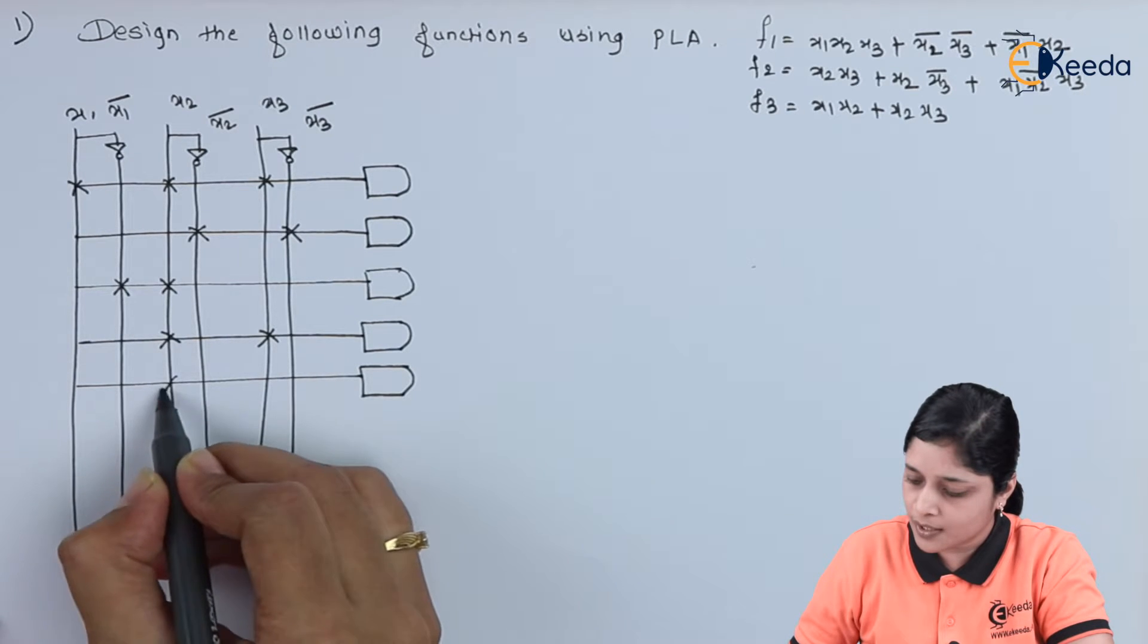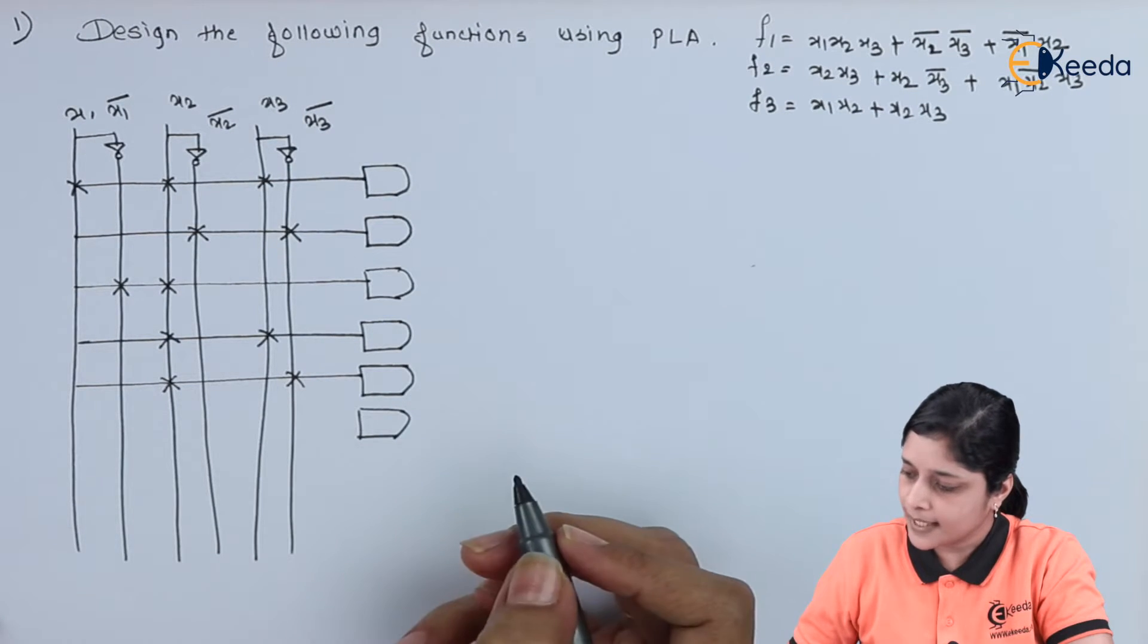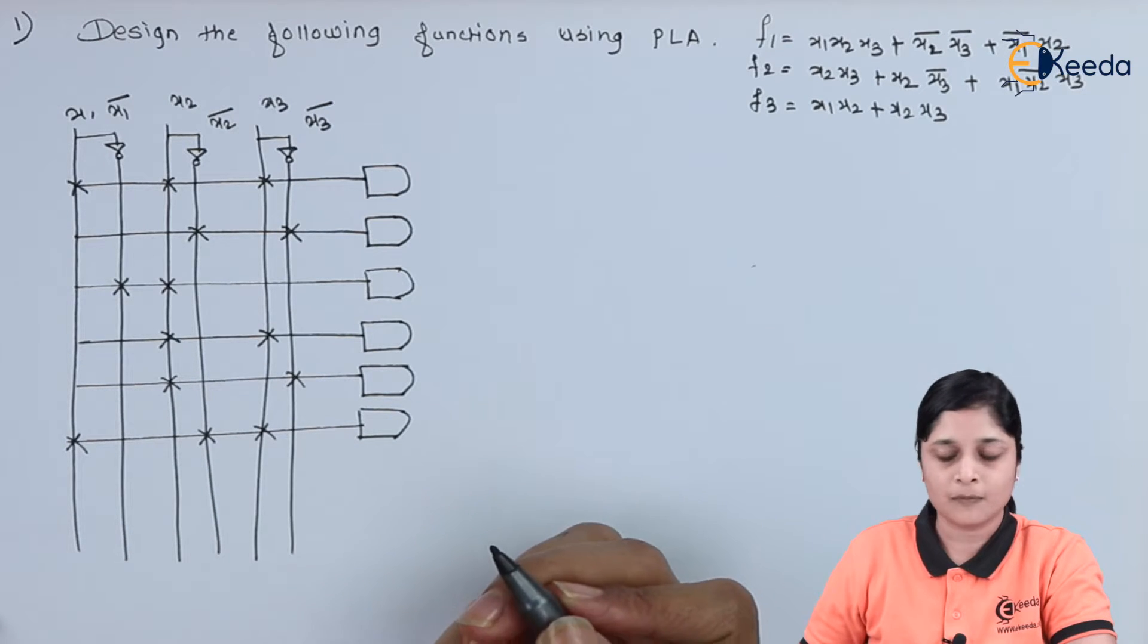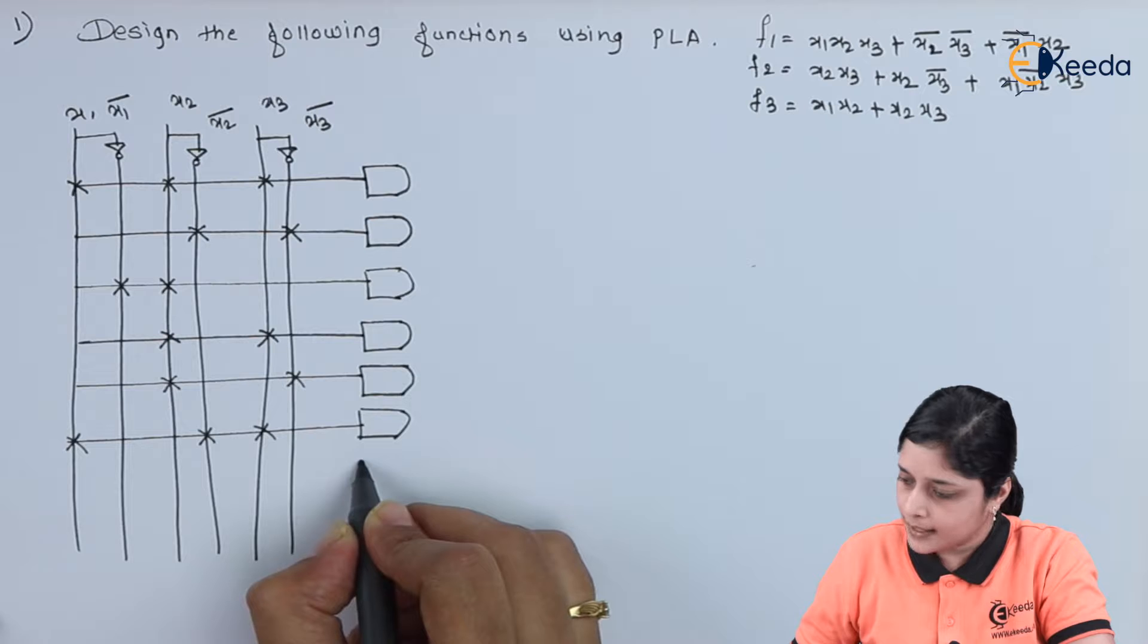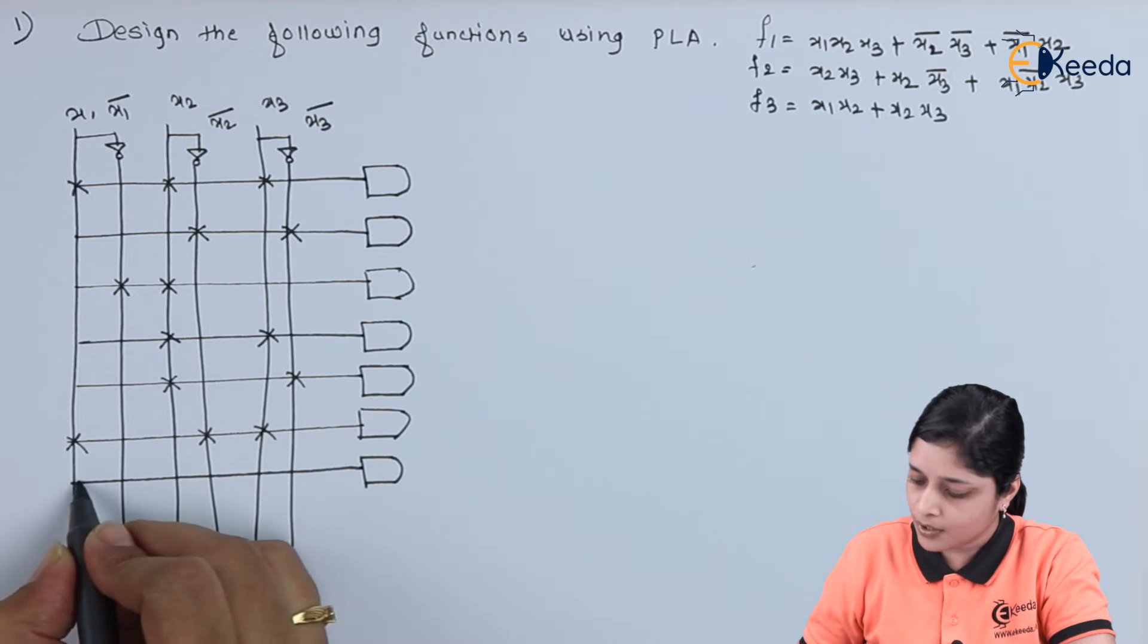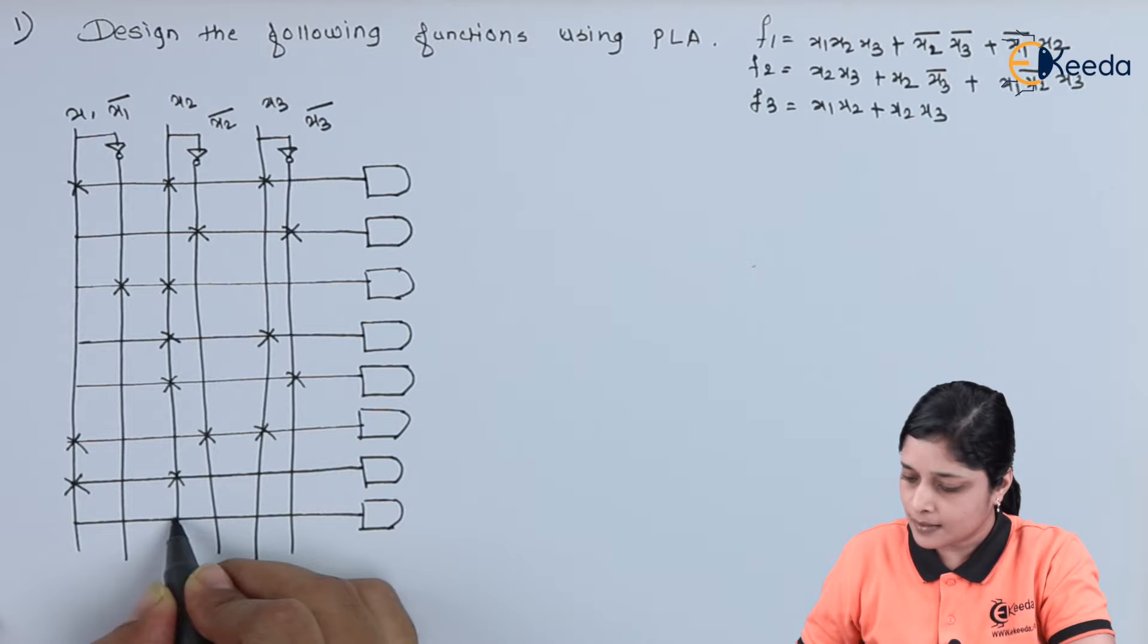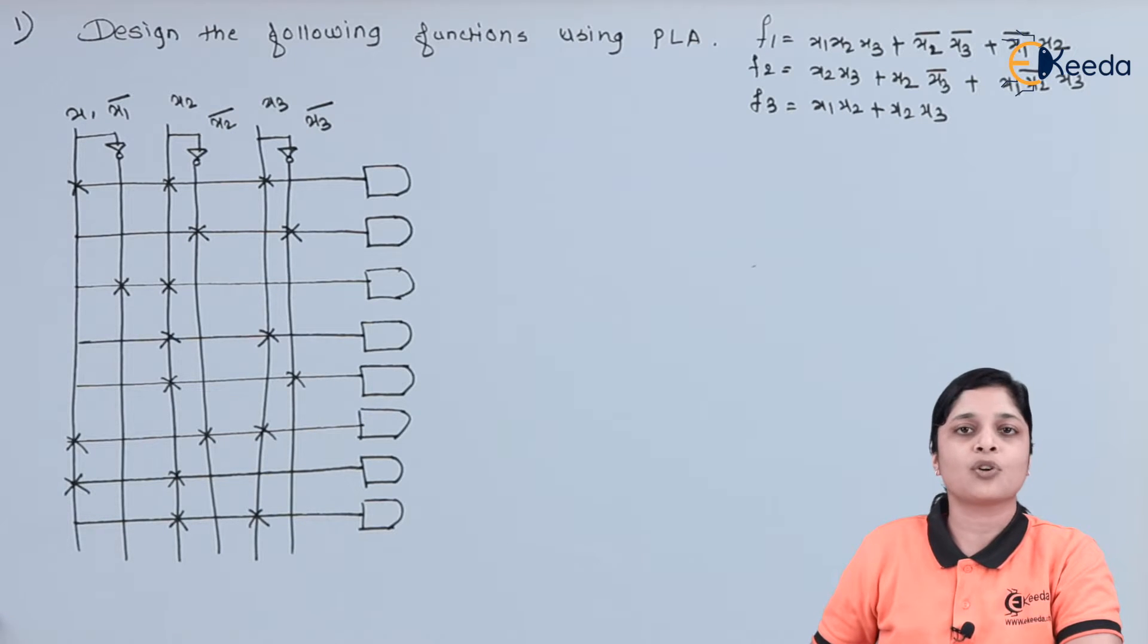So, you have to search for here X2 and X3 bar. Then X1, X2 bar, X3. We will make a cross for the respective term present for the AND gate. Then you have to draw one more AND gate. And the product term is X1, X2. And the last AND gate you have to draw here. This is your X2 and this becomes your X3. So, in this way you have to draw the AND gates.